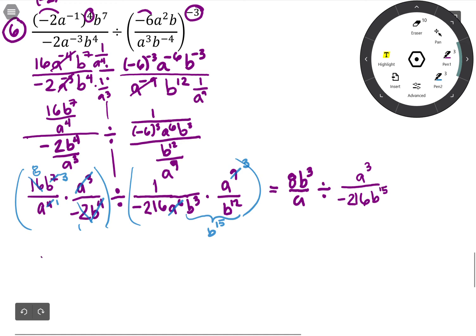Really close now. I'm finally ready to deal with that big division: 8b cubed over a, times the reciprocal, -216b to the 15 over a cubed.